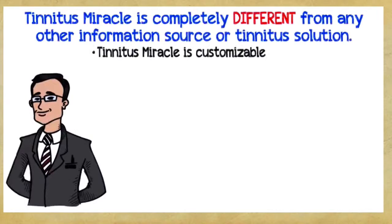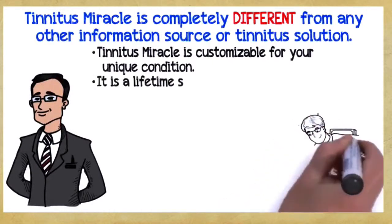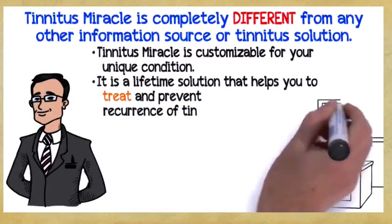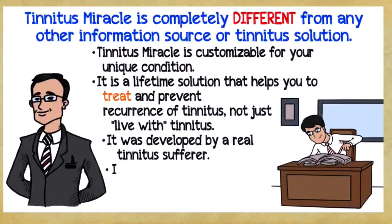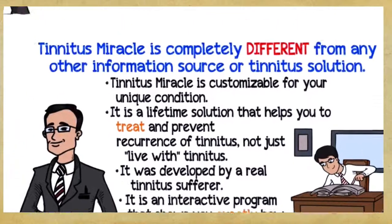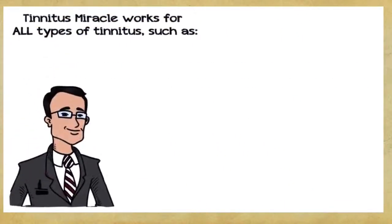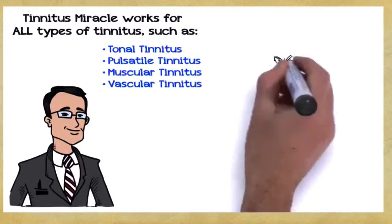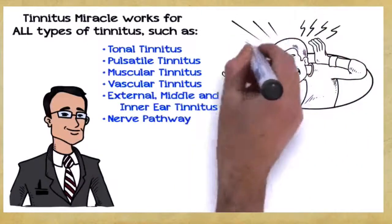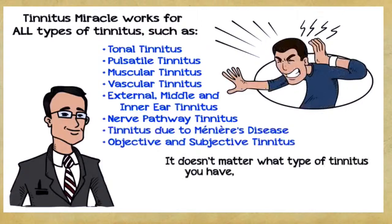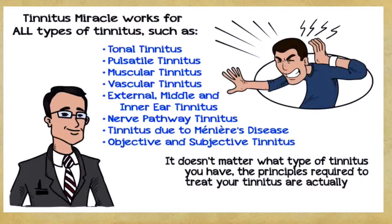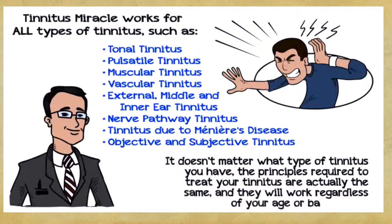Tinnitus Miracle is completely different from any other information source or tinnitus solution. It's customizable for your unique condition. It's a lifetime solution that helps you treat and prevent recurrence of tinnitus, not just live with tinnitus. It was developed by a real tinnitus sufferer. Tinnitus Miracle works for all types of tinnitus, such as tonal tinnitus, pulsatile tinnitus, muscular tinnitus, vascular tinnitus, external, middle, and inner ear tinnitus, nerve pathway tinnitus, tinnitus due to Meniere's disease, objective and subjective tinnitus. It doesn't matter what type of tinnitus you have, the principles required to treat your tinnitus are actually the same.